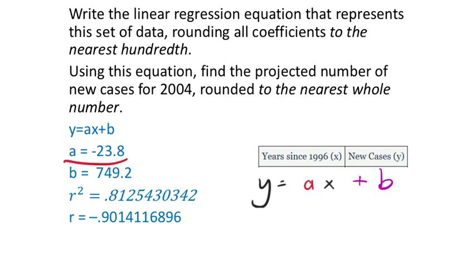The a value, which is shown here in the equation, I take that a and replace it with the number they've given us. No need to round this to the nearest hundredth because these are in the tenths. That's negative 23.8. That's my slope. The b value, my y-intercept, is positive 749.2. So I take the b and replace it with plus 749.2. That's the equation.